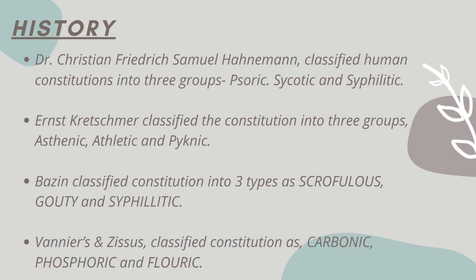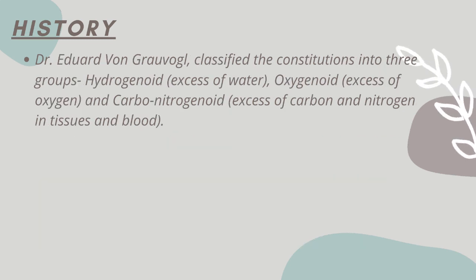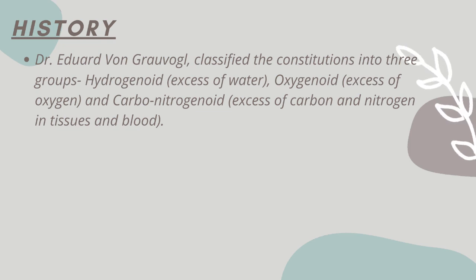Vanier's and Zyssus classified constitution as carbonic, phosphoric, and floweric. And Dr. Edward von Gravigel classified the constitutions into three groups: hydrogenoid, oxygenoid, and carbonitrogenoid.